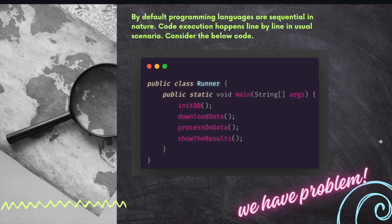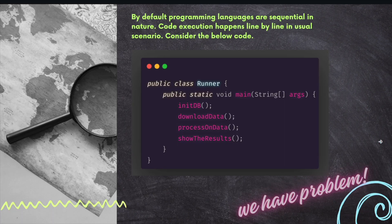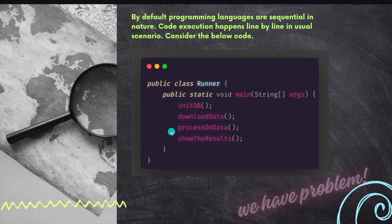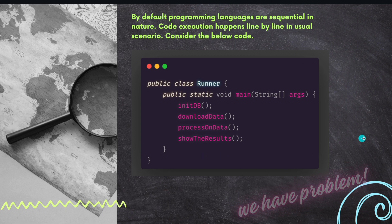So, what is the motivation for multithreading? By default, programming languages are sequential in nature — code execution happens line by line in the usual scenario. Consider a method with an initDB call, then a download data call, then process on data, and then show the results. In a single-threaded program, these instructions will be executed one by one, and the time-consuming section of the code can freeze the entire application.